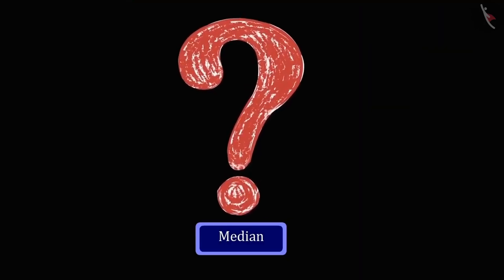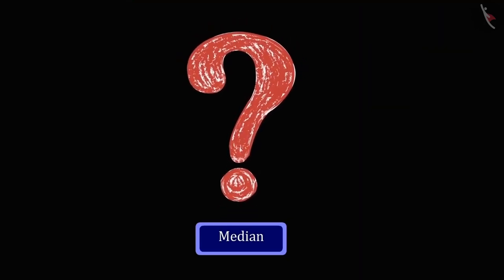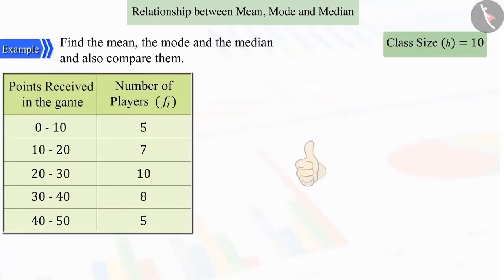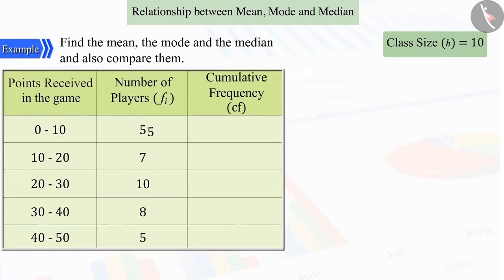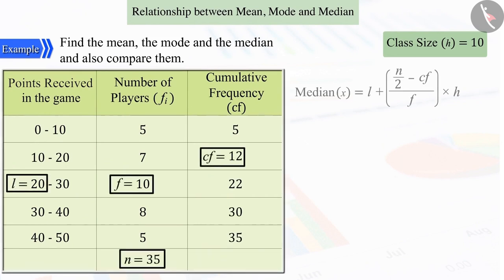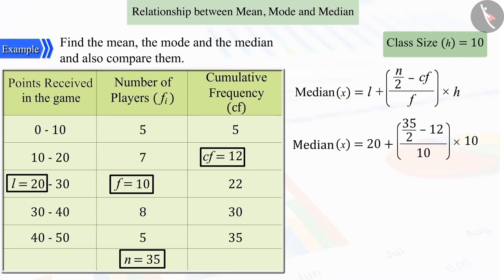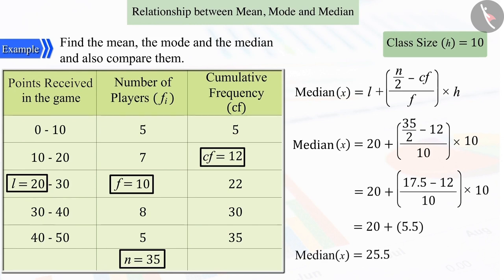So, can you tell what will be the median from the given distribution table? Good. For this, first let's construct the cumulative frequency column. Substituting all the values in the formula for the median and solving, we get the median value as 25.50.